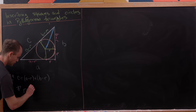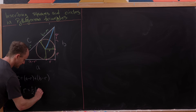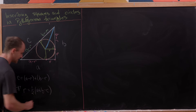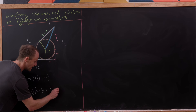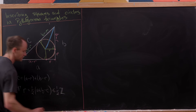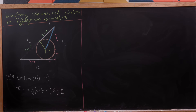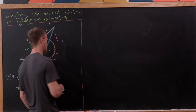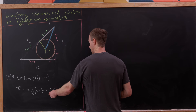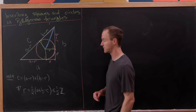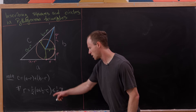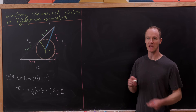We can expand and solve for r pretty easily, and we see that r is equal to one half times (a + b − c). Now a, b, and c are all integers, which means this is at least a half-integer. But what we want to show is that this radius is actually an integer. That will happen if and only if a + b − c is itself an even number.